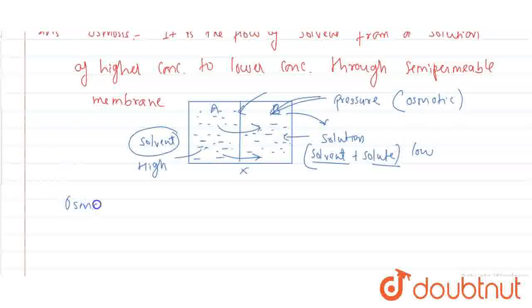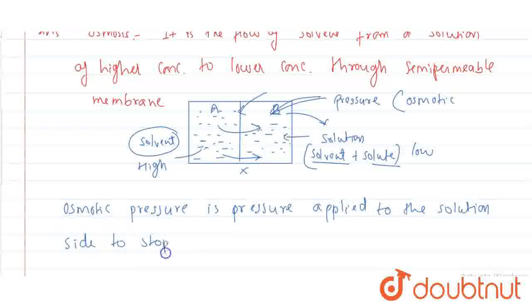So osmotic pressure is a pressure applied to the solution side to stop the osmosis. It is called osmotic pressure.